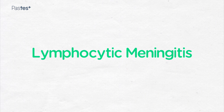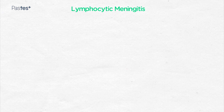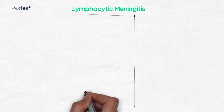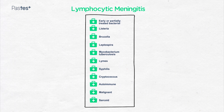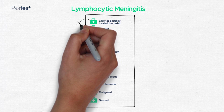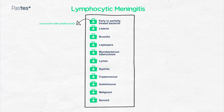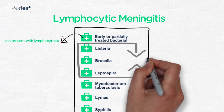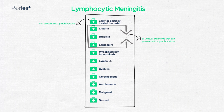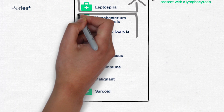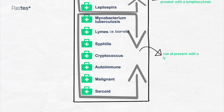Lymphocytic meningitis is particularly important because we're used to seeing polymorphs rather than lymphocytes. Remember that early or partially treated bacterial infections can present with lymphocytosis. Listeria, brucella, and leptospirosis are all unusual organisms that can present with a lymphocytosis. Mycobacterium tuberculosis, Lyme's disease (Borrelia), syphilis, cryptococcus, autoimmune conditions, malignancy, and sarcoidosis can all present with a lymphocytic meningitis.